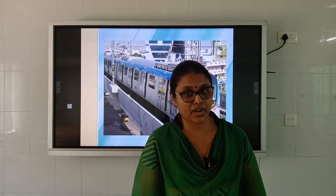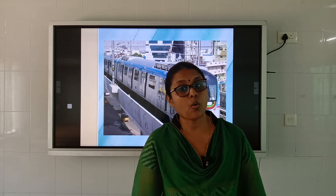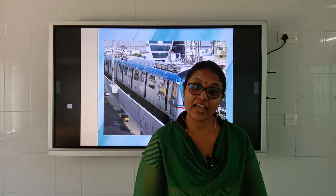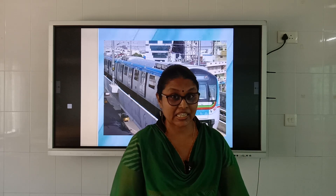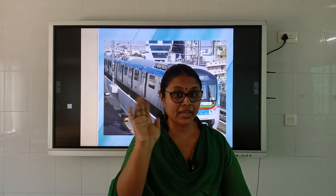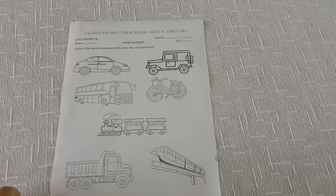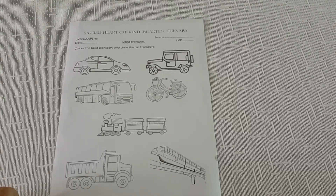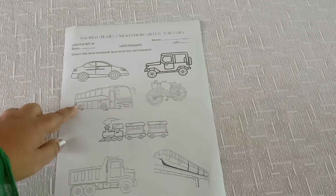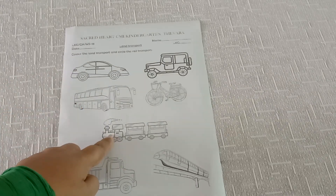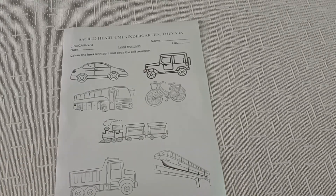So children, you now know about land transport. In the next class we will learn about water and air transport. See you in the next class — bye! Dear parents, there is a worksheet in which you have to guide your child to color the land transport and circle the rail transport. Thank you!